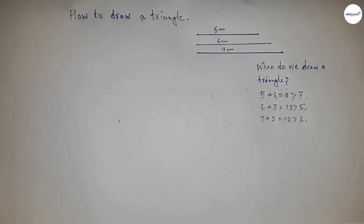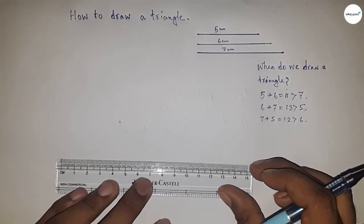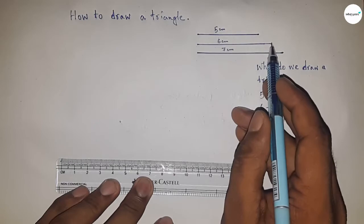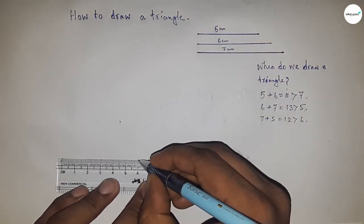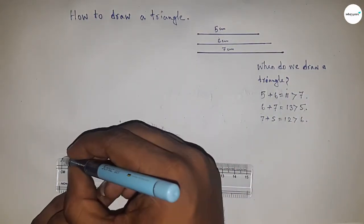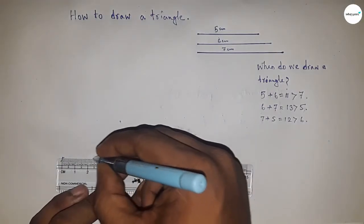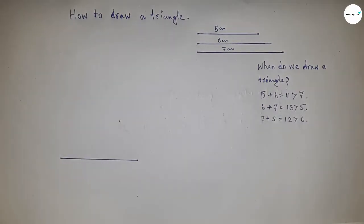So now we can draw the triangle. This is the condition for drawing a triangle. Now let's start drawing the triangle. I'm going to first take the length 6 centimeters here.